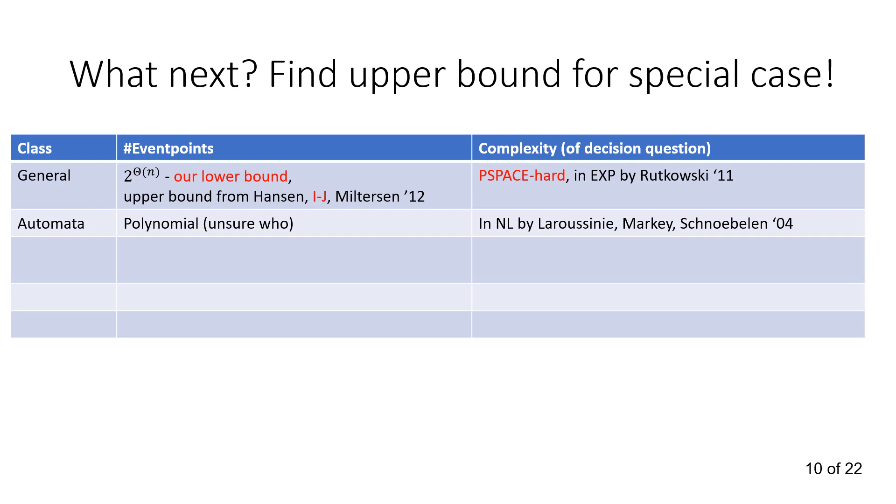So, Automata, the one-player case is already known. It's in NL by Alur, La Torre, and Pappas in 2004. Weights 0 and 1 is in P, as shown by Bouyer, Brihaye, Geeraerts, Krishnan, and Markey in the 2014 paper.